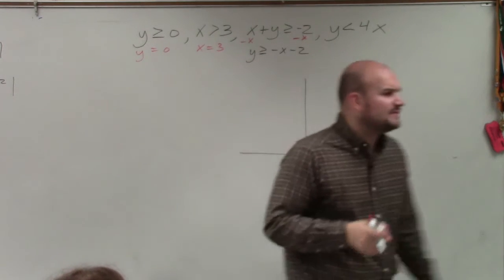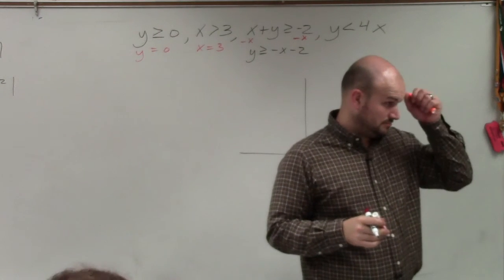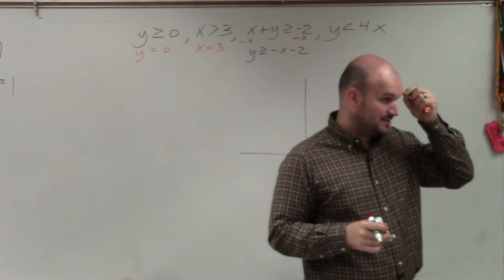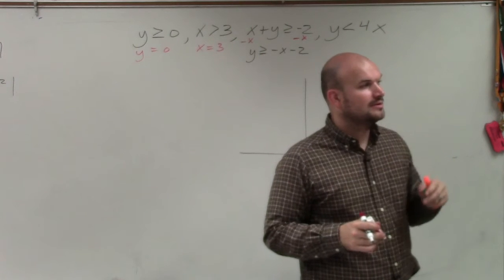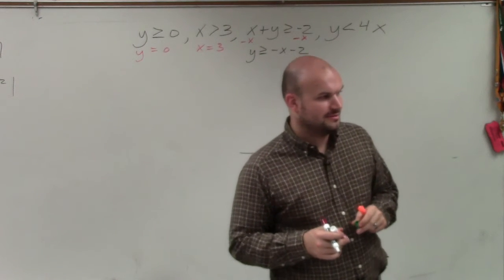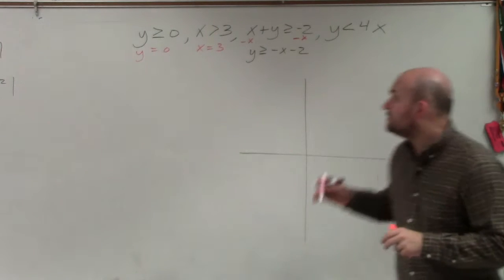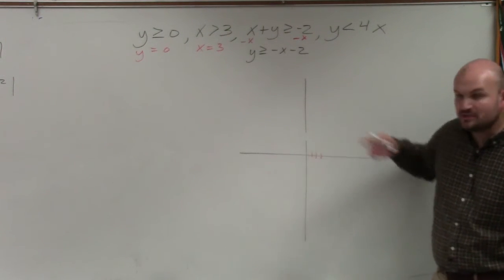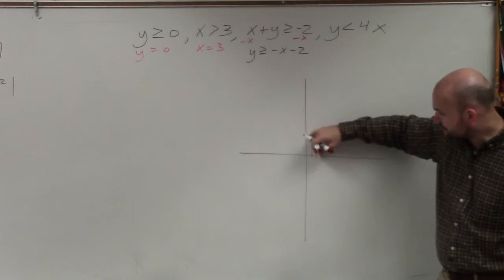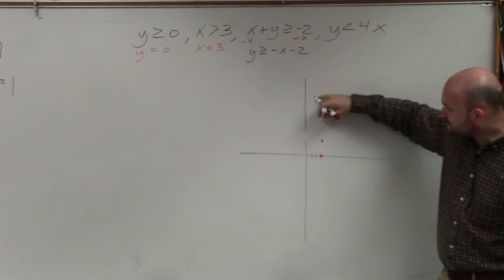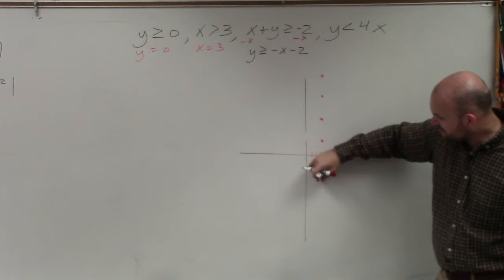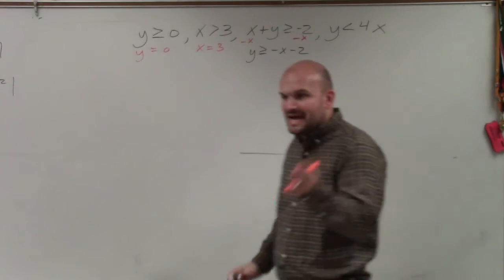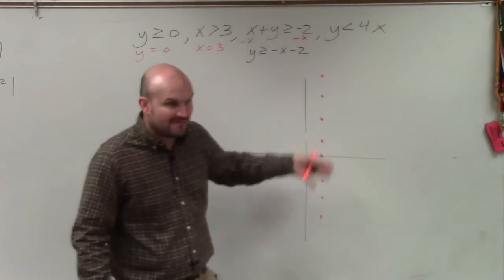If you guys remember, when we were graphing x equals 3, what we were talking about was the value of x on the number line was equal to 3. It didn't matter if y was positive, x always equals 3. It didn't matter if y was negative, x always equals 3. So the line x is equal to something created a vertical line at that value.